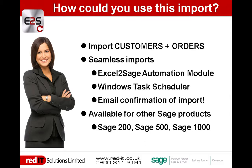So how would you use this import? You would use it to import customers predominantly from the webshop first, followed by the orders. It works seamlessly — it uses the Excel automation module, which is triggered with a task scheduler from Windows. So you can have it bringing in information every five minutes, ten minutes, or as frequently as you want. You also get an email confirmation of the import, which allows you to check things that have gone in. And as mentioned, it's available for other SAGE products.